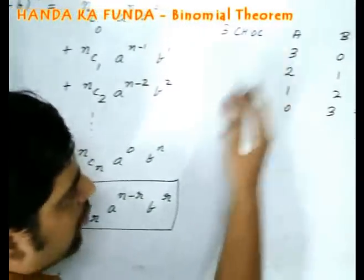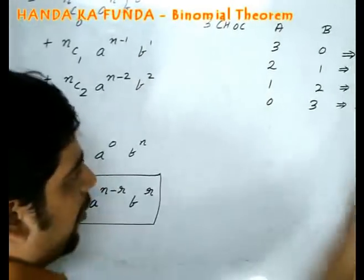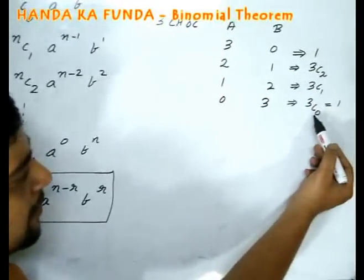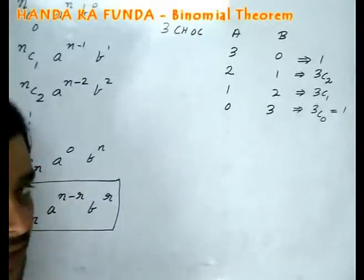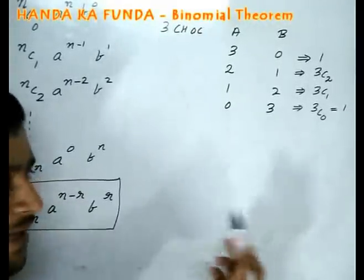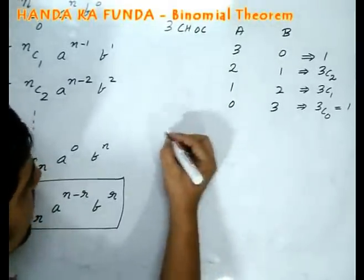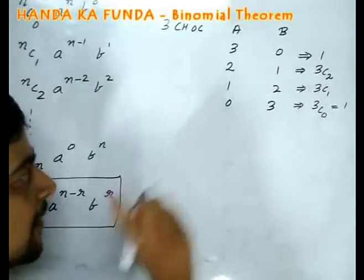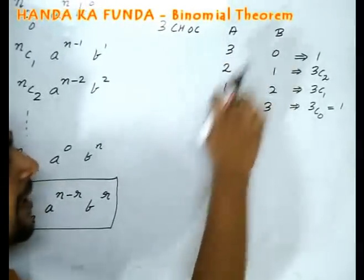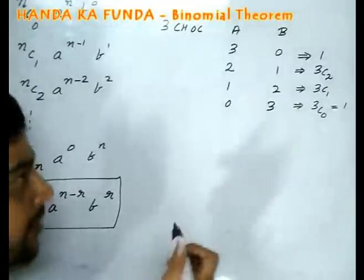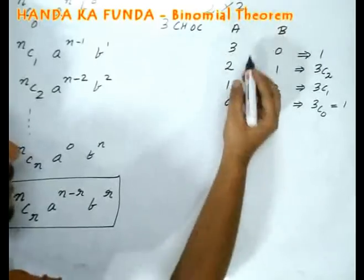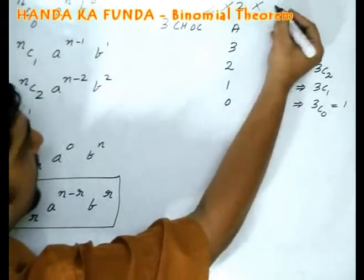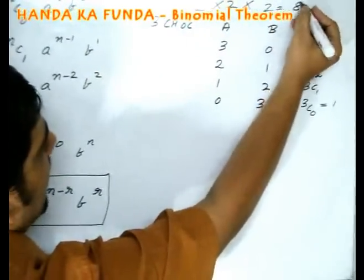So what will be the total value here? 1 plus 3C2 plus 3C1 plus 3C0 that will come out as 8 if you calculate it. Another way of getting would be, I have 3 chocolates. First chocolate can go to either a or to b so that is 2 choices. Second chocolate can also go to a or b so that is 2 choices. Third chocolate can also go to a or b that is 2 choices, which is 8.